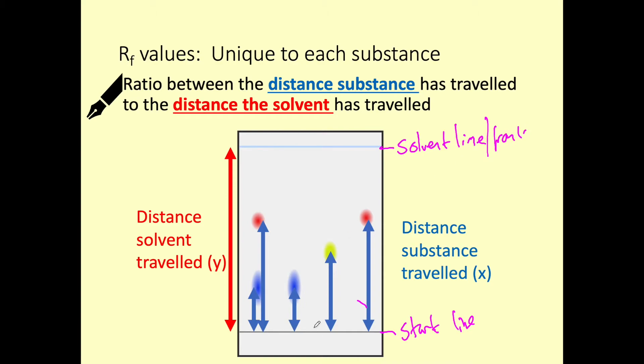So this is showing us how far the water or the other solvent, this is showing us how far our solvent has traveled compared to the substances and it's important that we're comparing it to the solvent front because we could stop the experiment at any point and therefore we can't just use a distance, we've got to compare the ratio between how far the substance has traveled and how far the solvent has traveled.